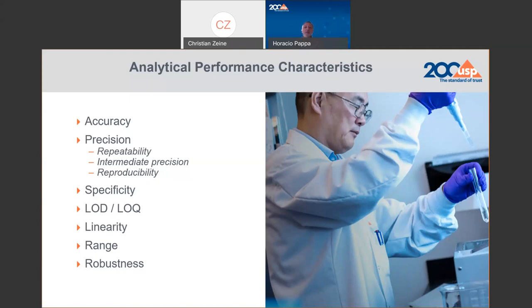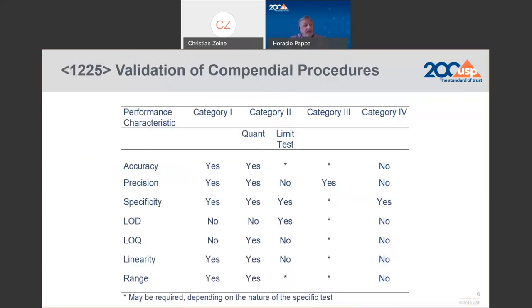In robustness, you use the fine-tuning of the method that has been developed, and this is where you will identify the system suitability parameters. This table is in ICH Q2 and in 1225, and is the basis of the current concept of validation, verification, and transfer. It defines what kind of experiments you have to do depending on the type of method you are trying to validate. Methods are divided in four categories: category one is when you are measuring the main component in a matrix; category two can be quantitative or limit test, and is for impurities—small components at low concentration.